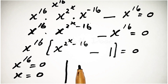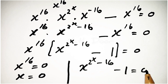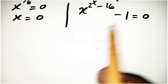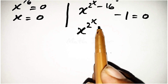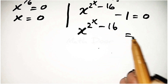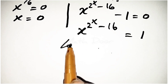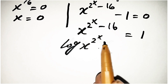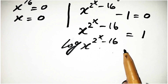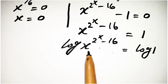Now the second factor becomes x power 2 power x minus 16 minus 1 is equal to 0. Taking 1 to the right side of the equation, the left side becomes x power 2 power x minus 16 is equal to 1. Now we will take a log on both sides: log x power 2 power x minus 16 is equal to log 1.